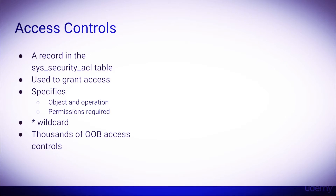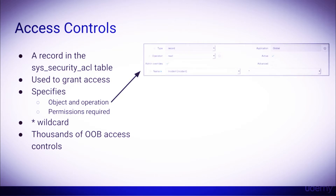Access controls are what define the actual permissions in the system. An access control rule is a record in the sys_security_acl table. These rules grant access to certain parts of the system. When creating an access control rule, you must specify the object such as a record, an operation such as create, read, write, or delete, and finally the required permissions, which will be a role, a set of roles, and/or any additional conditions.